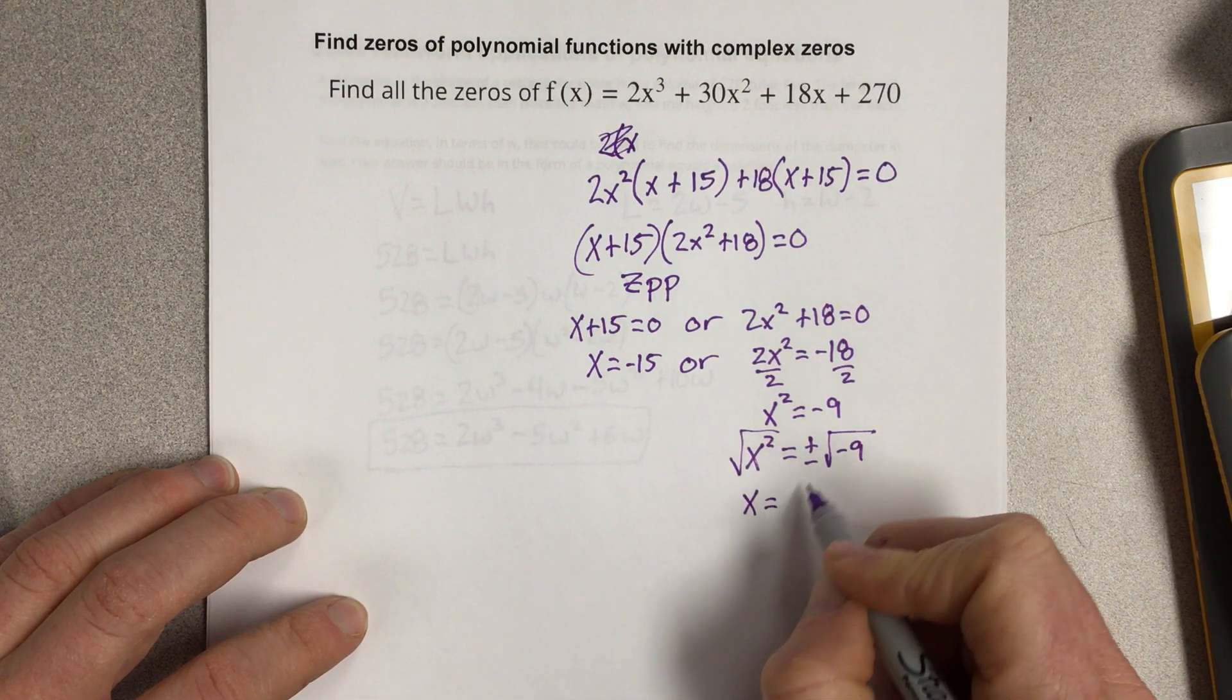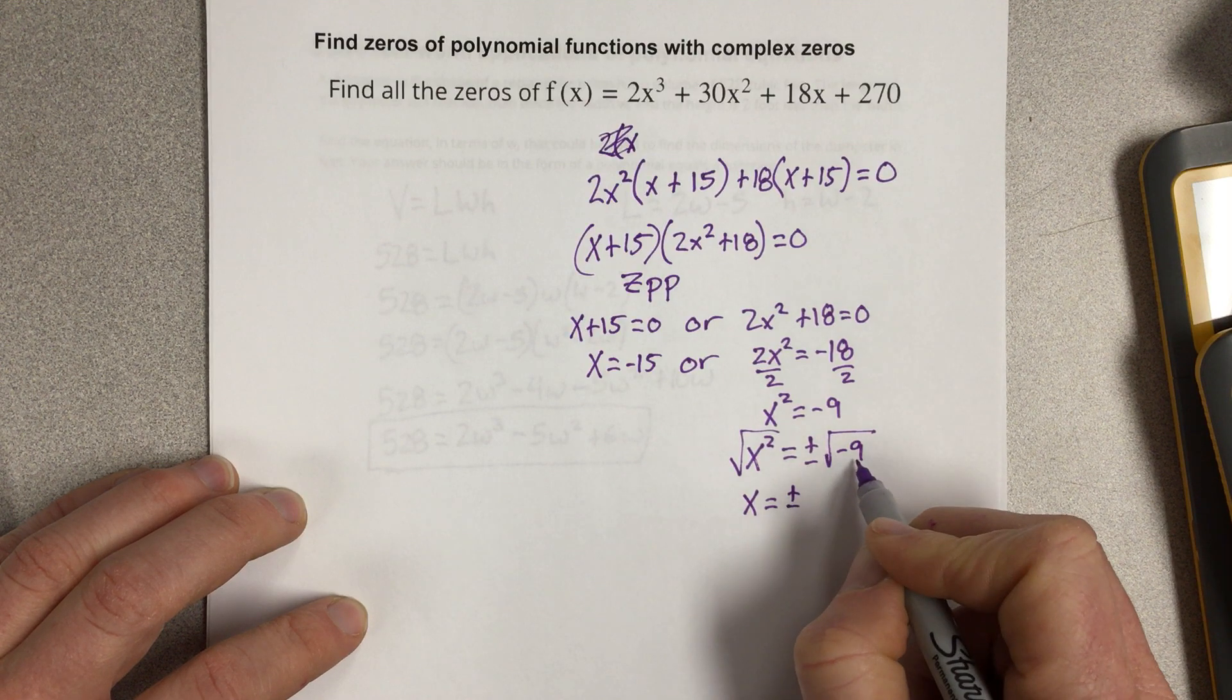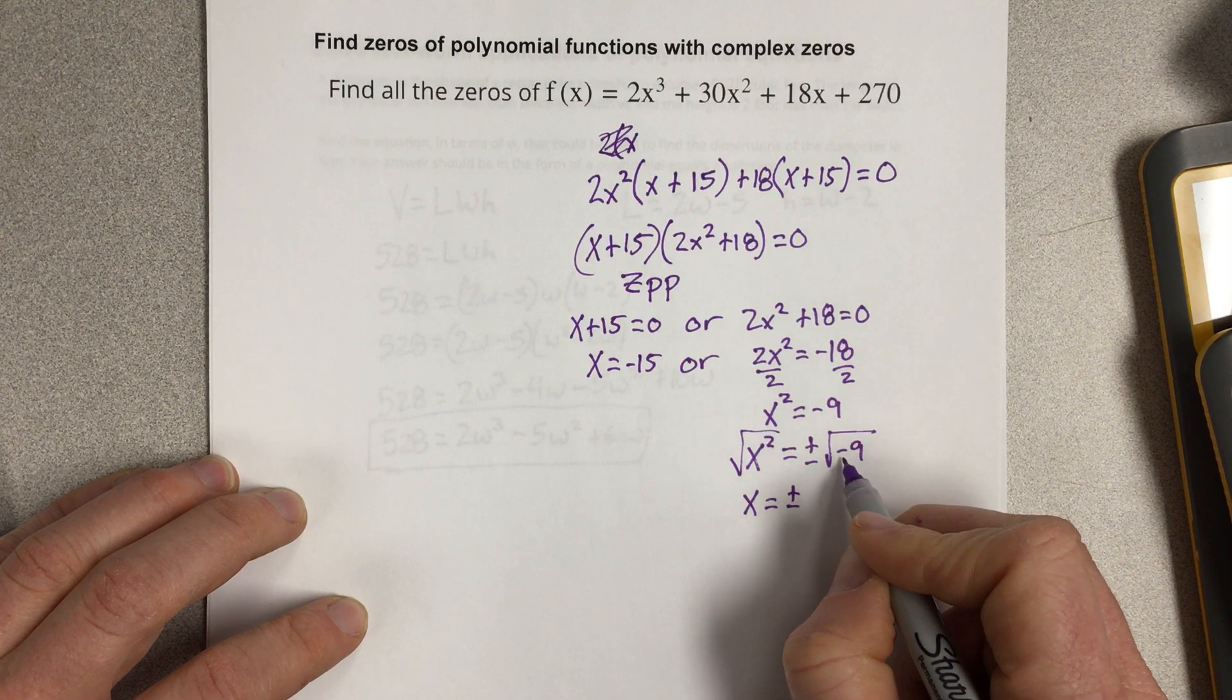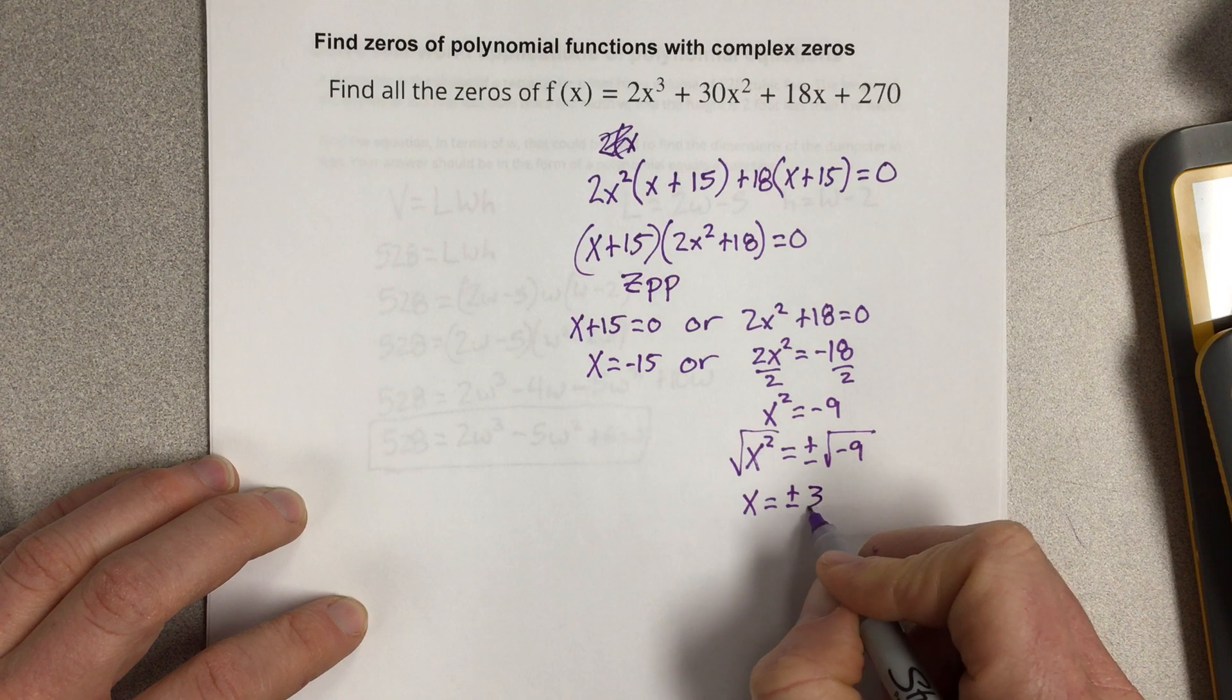So I get square root of x squared, which is equal to plus minus the square root of negative 9. So x is actually equal to plus and minus 3i, since the square root of 9 is 3 and the square root of negative 1 is i.